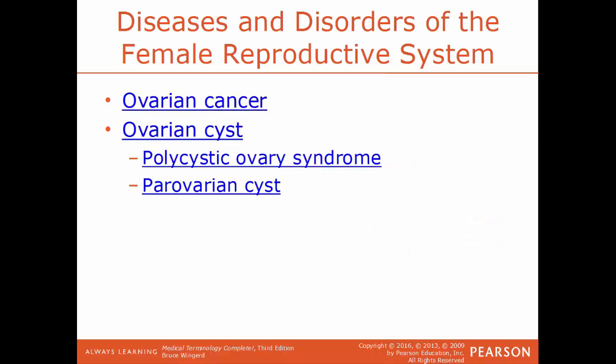Ovarian cancer is cancer within the ovaries. An ovarian cyst is the development of a fluid-filled sac within the ovary. This can lead to polycystic ovarian syndrome, caused by estrogen and progesterone levels becoming severely imbalanced, leading to the development of multiple cysts throughout the ovary. A perovarian cyst is the growth of a fluid-filled sac very nearby the ovary but not attached to it.